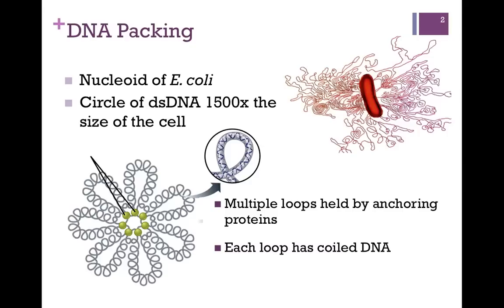Clearly the DNA has to be packaged into a smaller molecule in order to fit within the cell. E. coli is a prokaryote with no nucleus, but it still organizes its DNA in the form of a nucleoid, illustrated in the lower left here. The DNA is supercoiled, with anchor proteins to hold those loops in place, illustrated by the green spheres here.